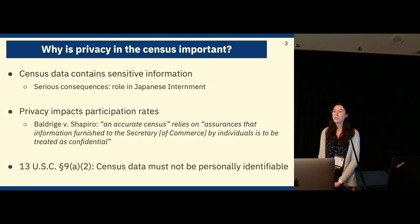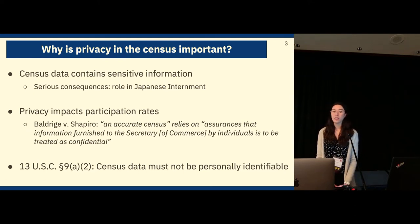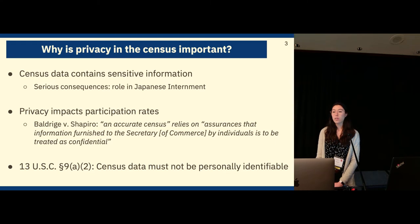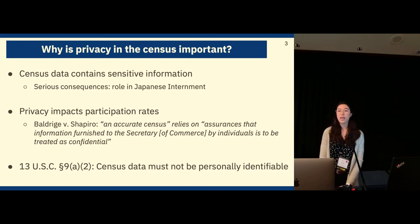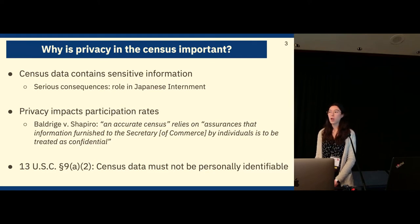In addition to accuracy, privacy is extremely important as well. Since census data contains sensitive information, its public release can have serious consequences. For example, census data played a role in finding Japanese individuals for internment. Privacy also impacts participation rates, which in turn impacts accuracy — it's important that people feel comfortable responding to the census. Finally, Title 13 mandates that census data must not be personally identifiable.